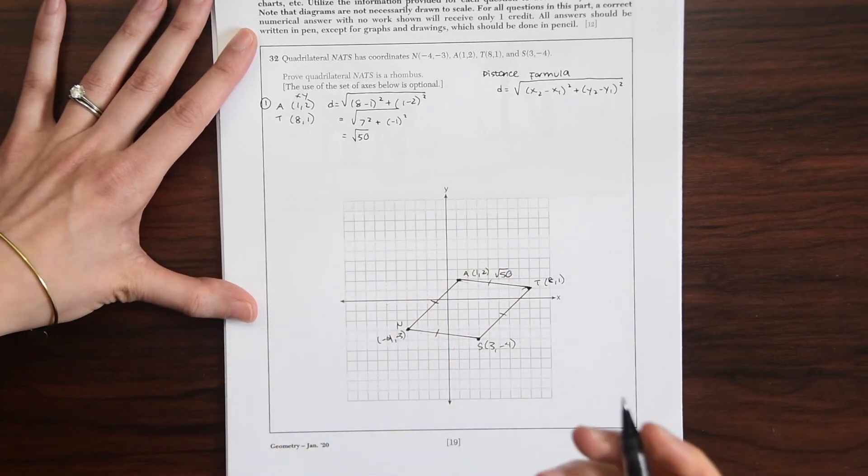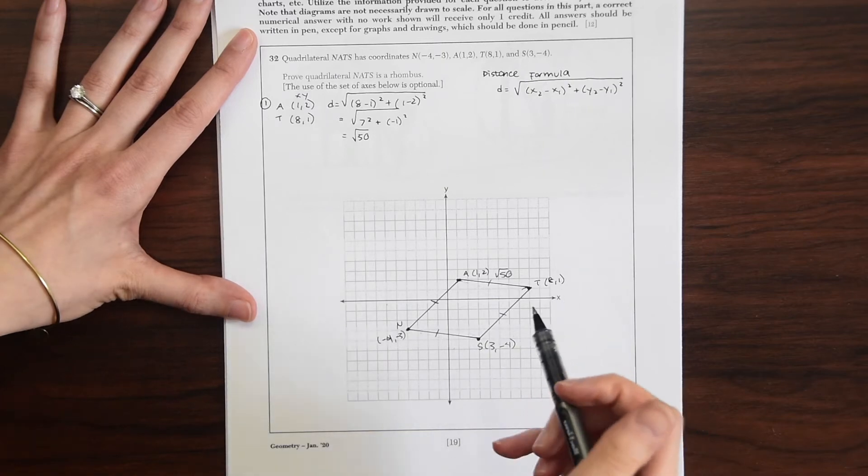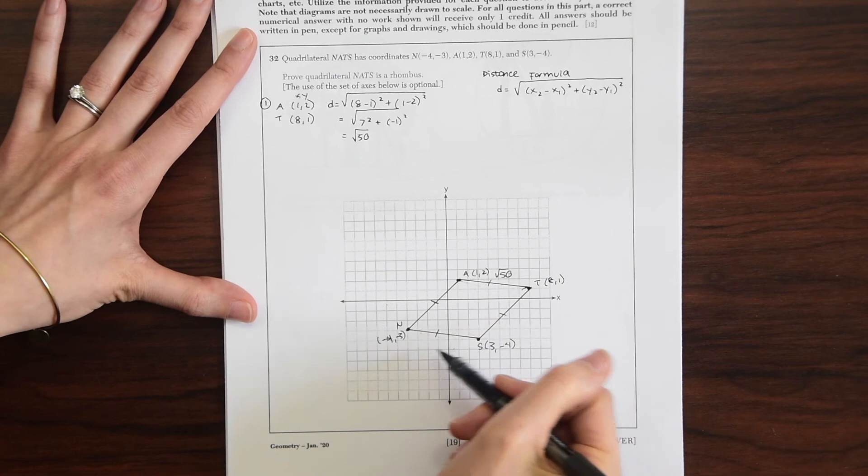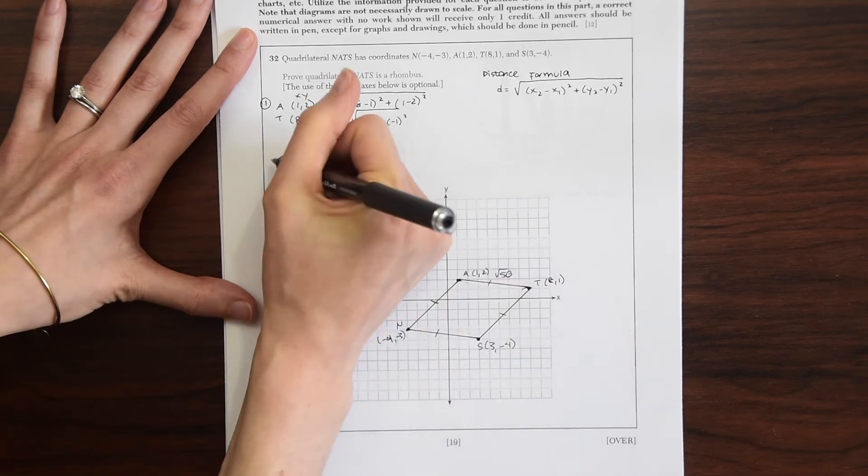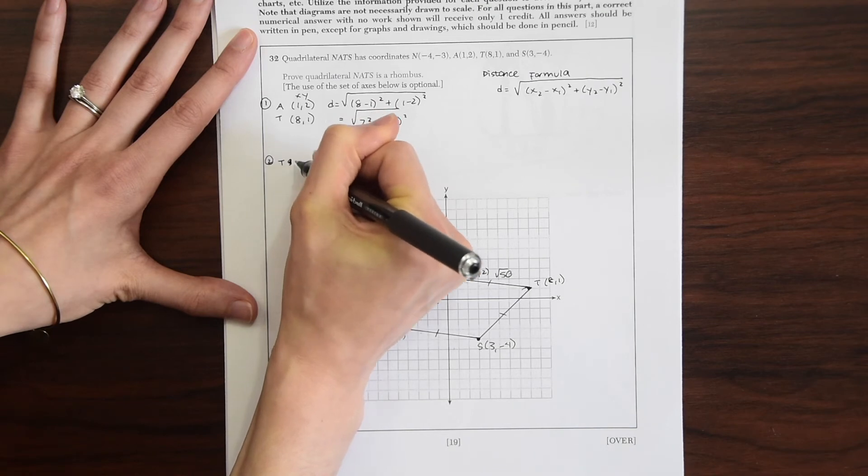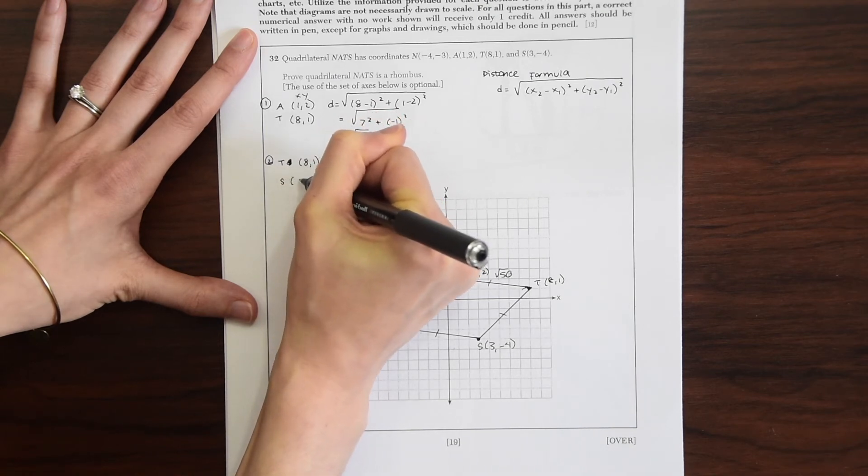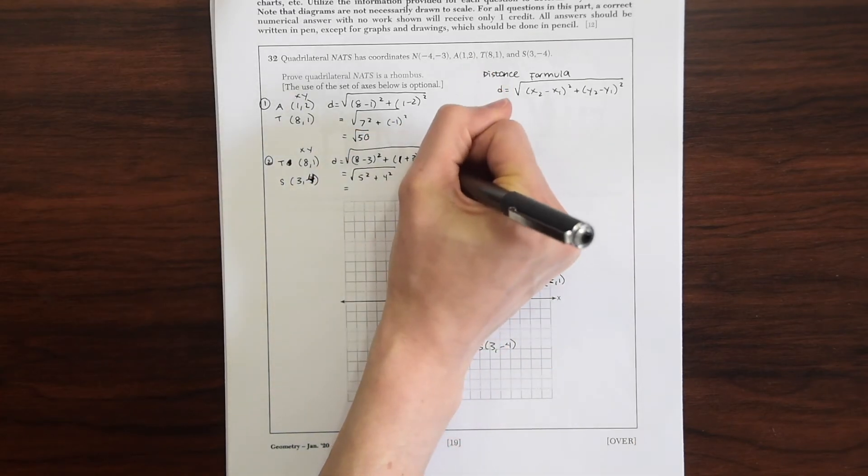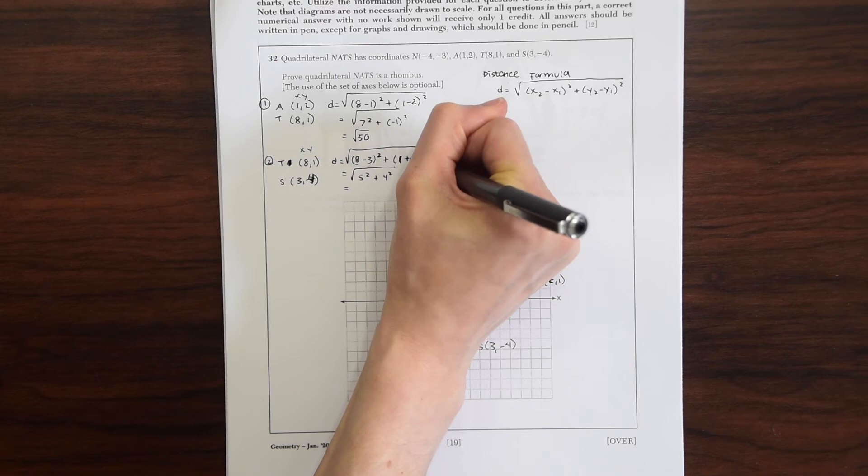Okay, we don't know if all the sides are congruent yet, but we're just getting started. So let's try another side. Let's go to TS. So this is the second side. So T is (8,1), S is (3,-4).